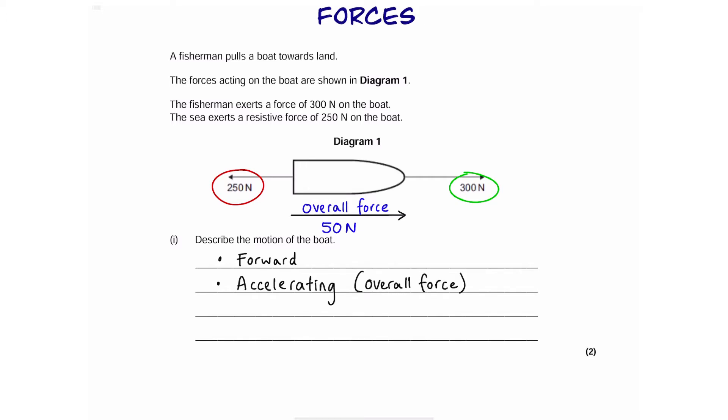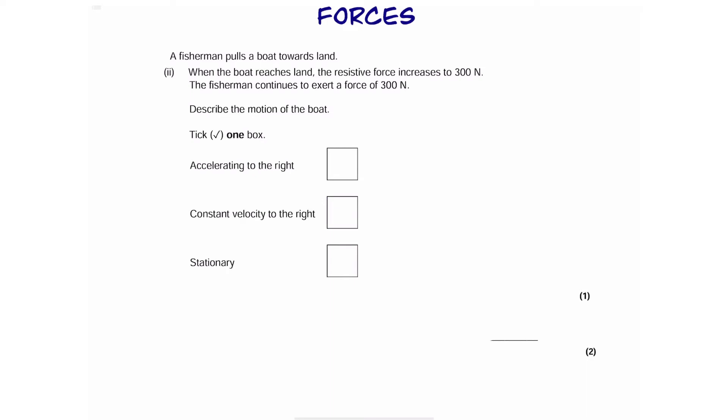So remember, whenever there's an overall force you have acceleration. Okay, so here's the next part. Let's bring up the picture of the boat. It says that the resistive force increases to 300 Newtons. Now both forward and backward forces are balanced.